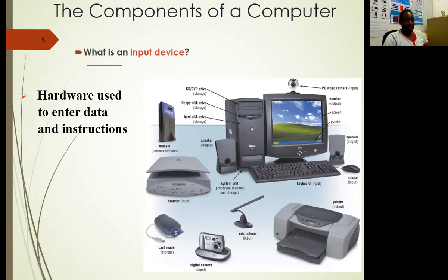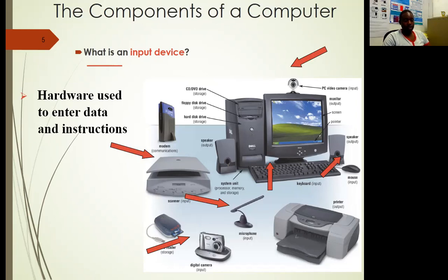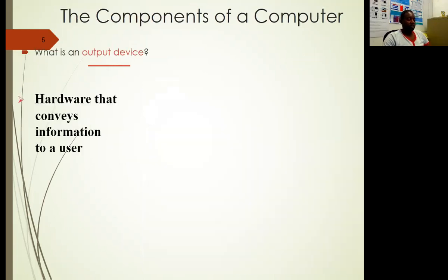Basically, that is what you can find on your computer, though you don't find everything — you might just find storage, a few input devices, and output devices, and it will still be a complete set. Output devices are devices that convey information to a user. You should understand that the computer understands information in terms of ones and zeros, but for the user to understand what has been processed, it needs to come out as user-usable information.